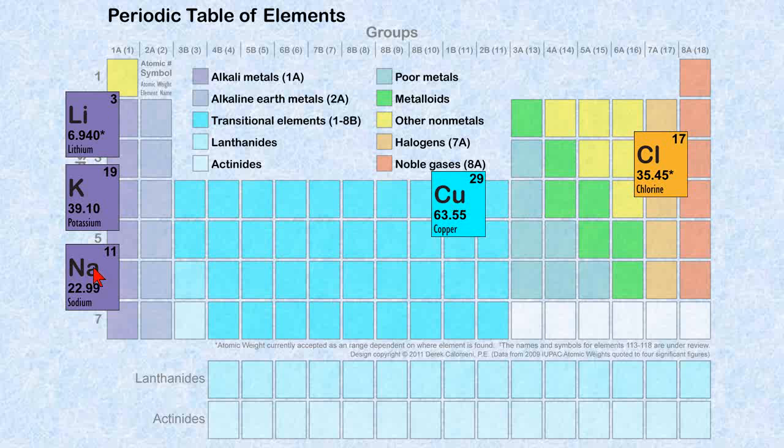And then lithium, potassium, and sodium are all alkali metals. And because they're all grouped together vertically in a group, they have similar properties.